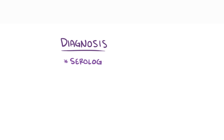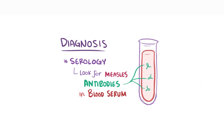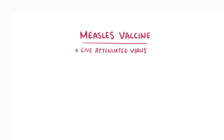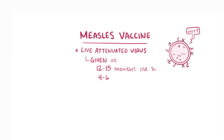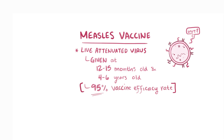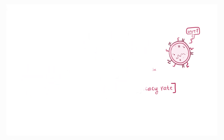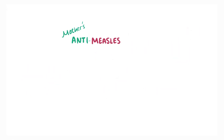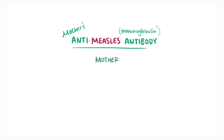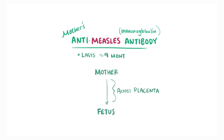Diagnosis of measles is usually done via serology, looking for measles antibodies in the blood serum, and the disease is usually most likely to happen with unvaccinated individuals. The measles vaccine is a live attenuated immunization — essentially meaning it's been weakened — given between 12 and 15 months of age and again between 4 and 6 years of age. It has an impressive 95% vaccine efficacy rate, meaning 95 out of 100 cases among unvaccinated people would have been prevented by the vaccine. Another source of protection for young infants is their mother's anti-measles antibody, or immunoglobulin, which the fetus gets transplacentally and lasts until about 9 months of age.